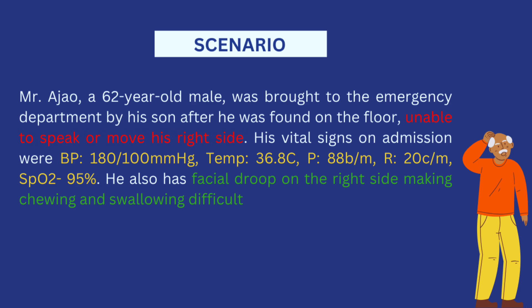Like the fact that he's unable to speak, unable to move his right side, the vital signs — obviously the blood pressure is pointing towards hypertension — and there's also a facial droop making chewing and swallowing difficult. During your exam, it is important to read the scenario very well and check out for pointers towards your nursing diagnosis, because most of the time the scenario will tell you what the examiner expects you to write.